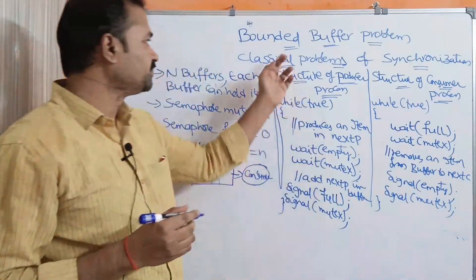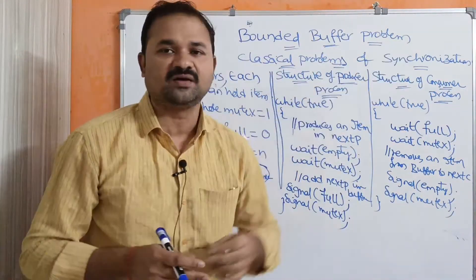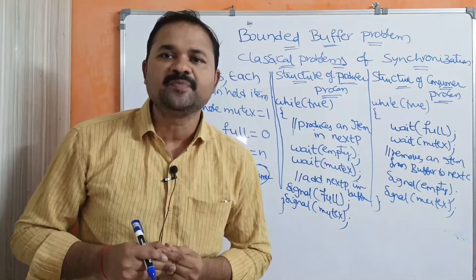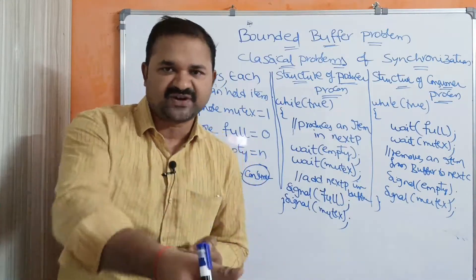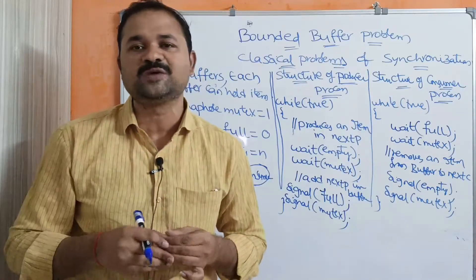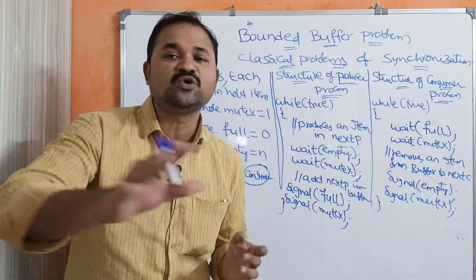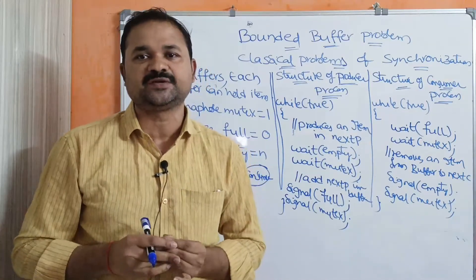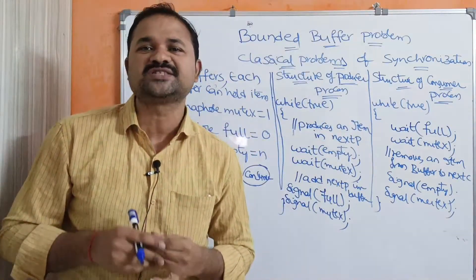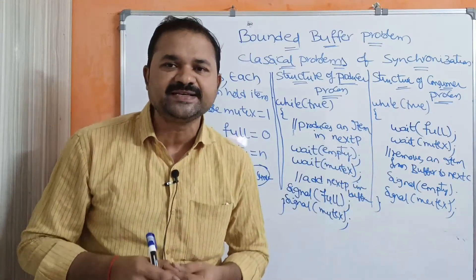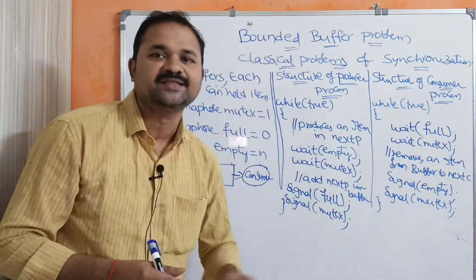Let us discuss the bounded buffer problem. This is one of the classical problems of synchronization. It can also be called the producer-consumer problem using semaphores. In a previous video on process synchronization background, we saw the producer-consumer problem without semaphores, where we get a race condition. In order to solve that problem, we require process synchronization techniques. In an examination, if the question asks you to explain the producer-consumer problem using semaphores, then you have to explain this topic.